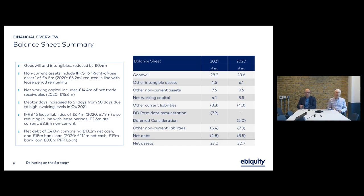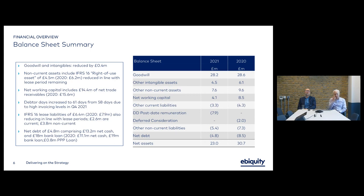Just quickly highlighting a few points on the balance sheet. We have to treat the deferred consideration on Digital Decisions — which is due next year — as a P&L item, because it's related to the founder and vendor staying in the business, making it a P&L charge rather than a balance sheet item. We estimate we expect to pay about £12.5 million in that deferred consideration next year, and we've accrued £7.9 million of that in 2021.